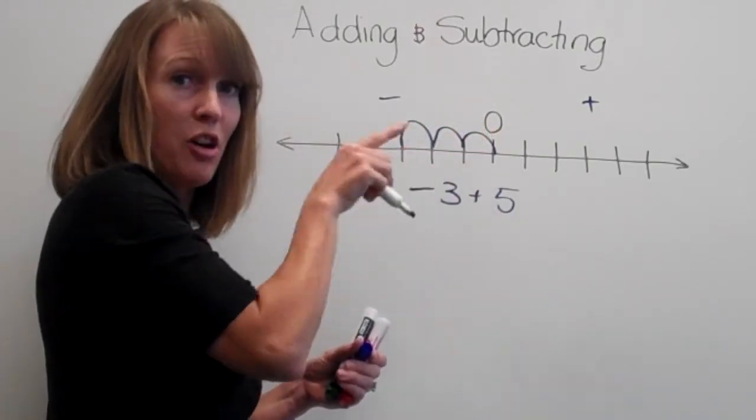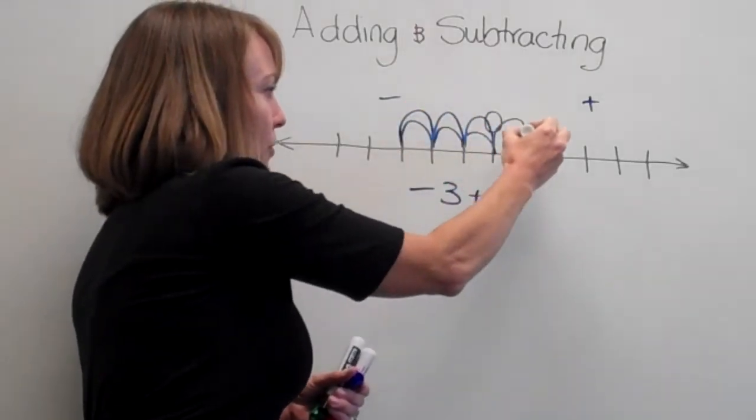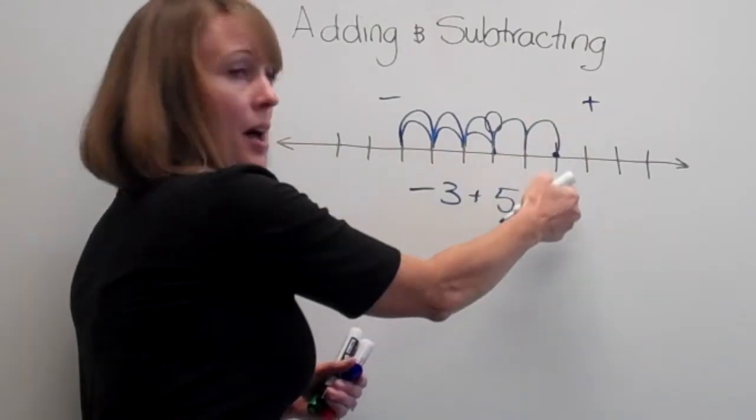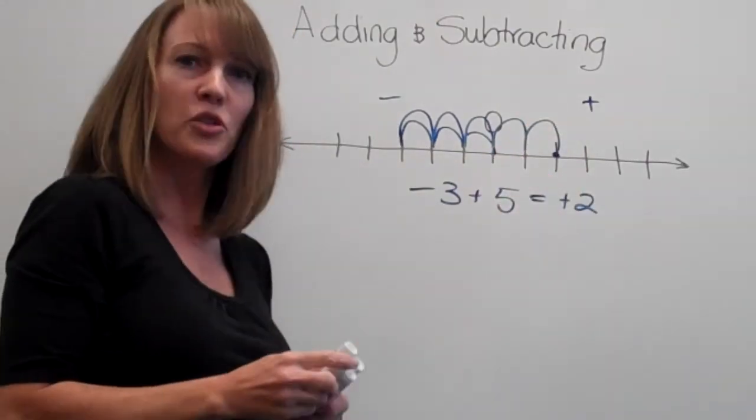But then to go positive 5, we've got to go back the other direction. So we're going to go 1, 2, 3, 4, and 5. And we end up on positive 2. Positive has won this battle.